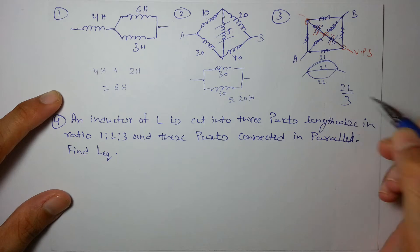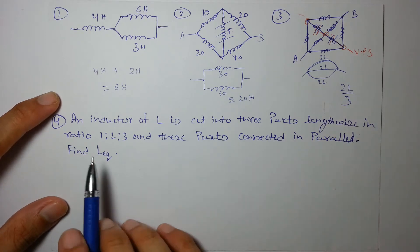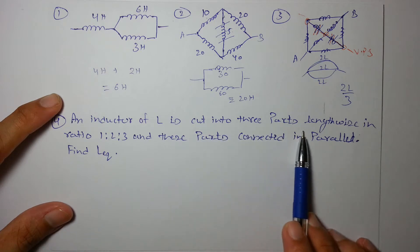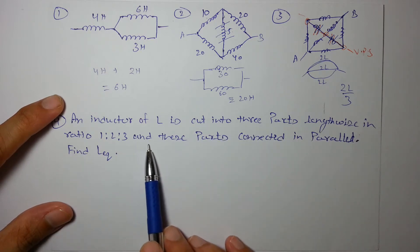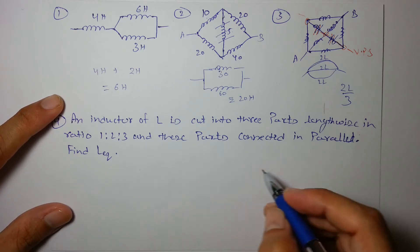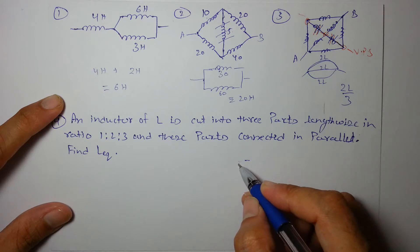In the next part, an inductor of inductance L is cut into 3 parts lengthwise in the ratio 1:2:3. These parts are connected in parallel. Find the equivalent inductance.